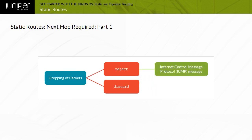If you specify reject as the Next Hop value, the system sends an Internet Control Message Protocol, or ICMP, Network Unreachable message back to the source of the IP packet. If you specify discard as the Next Hop value, the system does not send back an ICMP message — the system drops the packet silently.